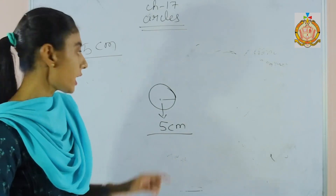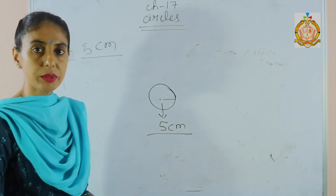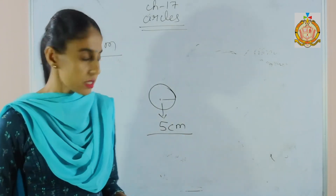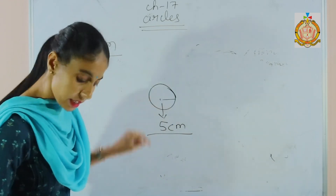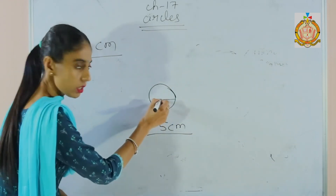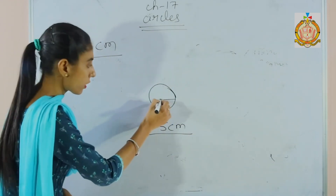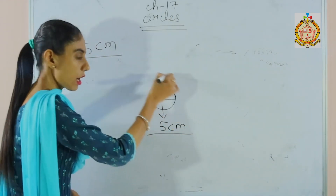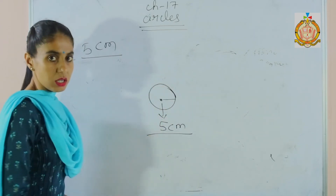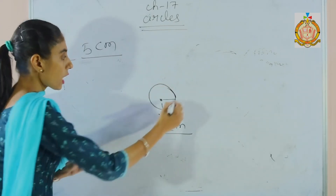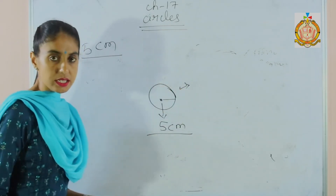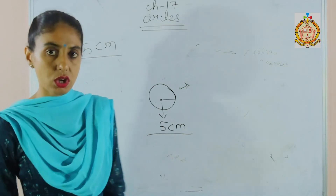You measure 5 cm with the help of the scale, then take it as the center of the compass, and after that draw the circle. Only these types of sums are in your exercise — try to solve it.